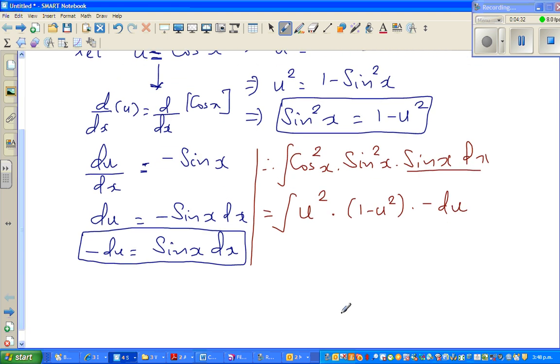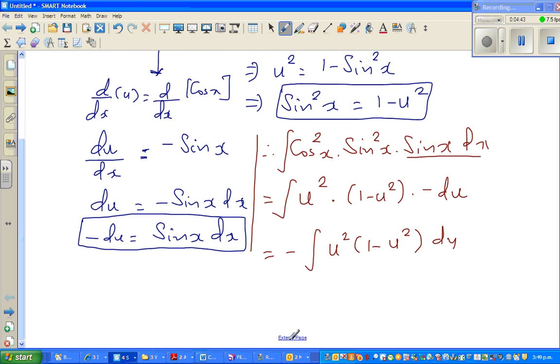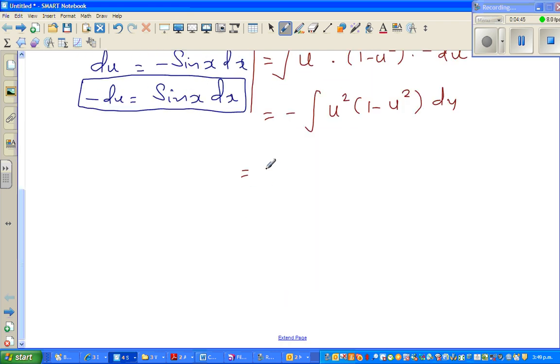So I can factor out this minus. So this is minus integration of u squared times 1 minus u squared du. So expanding this, this is u squared minus u to the power 4 du. You can distribute this du. So this is minus integration of u squared du minus integration of u to the power 4 du.